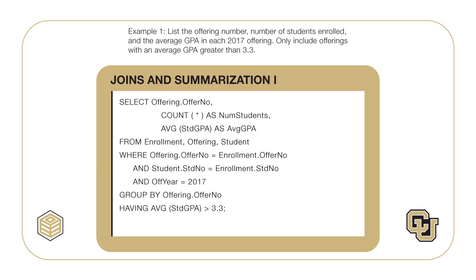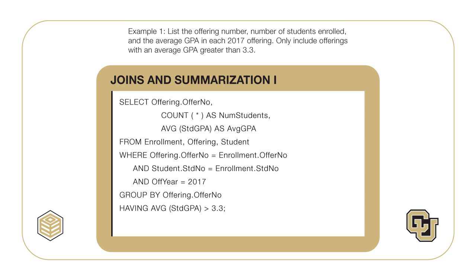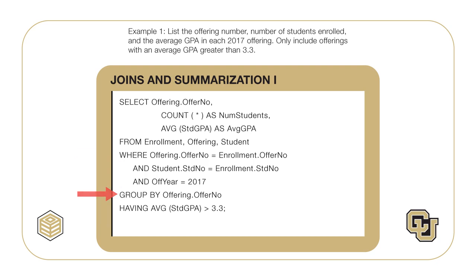For the third critical question concerning individual rows versus groups of rows, groups of rows are needed because the result includes the average student GPA and the condition involves the average student GPA. The SELECT statement shows three columns in the result, including two computed columns using the COUNT and AVG functions. Note the usage of renaming with the AS clause to ensure meaningful column names in the result table. The FROM clause uses the cross product join style to combine the student, enrollment, and offering tables. The WHERE clause has two join conditions and a condition on offering year. The GROUP BY clause includes the offer number column. The HAVING clause includes a condition using the AVG function.